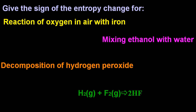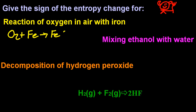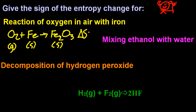Some trickier ones — these are a little tricky. The top one was one that most people got wrong a few years ago on the IB paper. So oxygen and iron goes to iron oxide — I'm not sure if it's iron 2 or iron 3 oxide, but it doesn't matter. It doesn't even have to be balanced, because oxygen is a gas and the other two are solids. All ionic compounds are solids. So delta S is negative — I'm losing a gas.